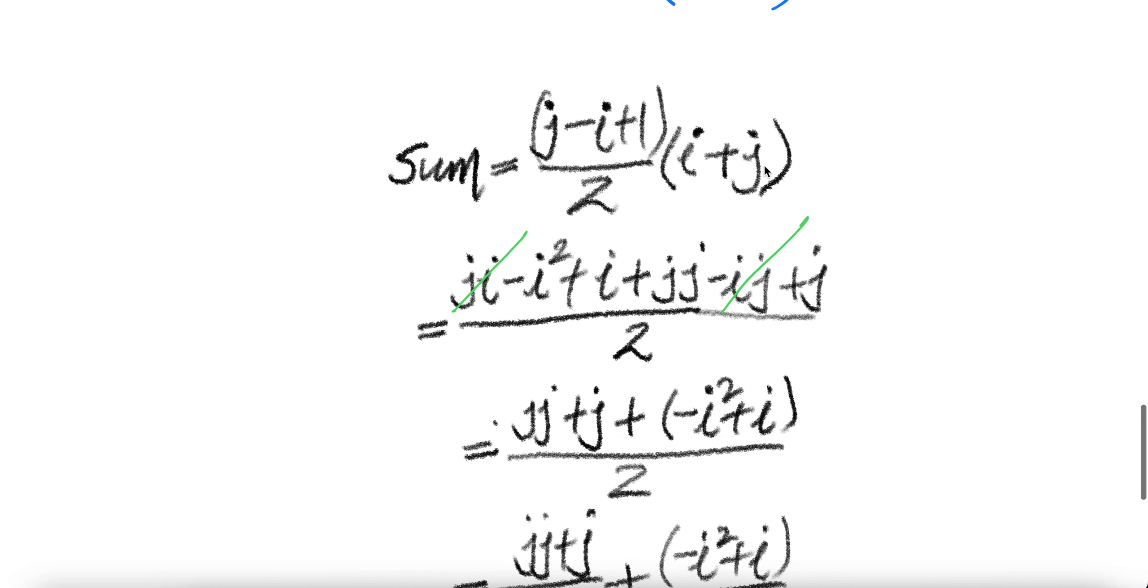Now let us distribute that. J times I minus I squared plus J, done with that. Let's do this: J times J minus I times J plus J. I times J and I times J cancel, one is positive, one is negative. Then we are left with that.